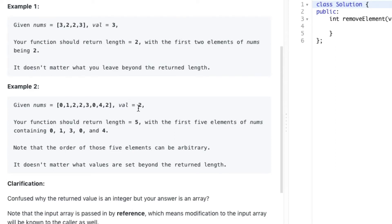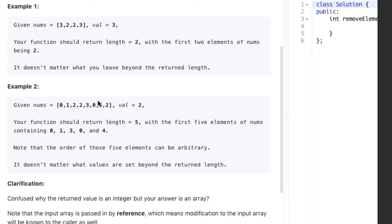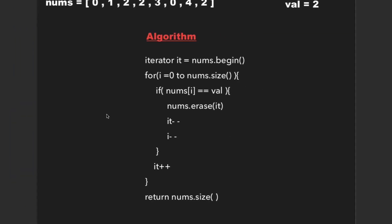and the val is 2. So after removing 2 from the given array, we are left with 0, 1, 3, 4. Now let's consider the second example where the value of nums array is as follows and val is 2. Let's